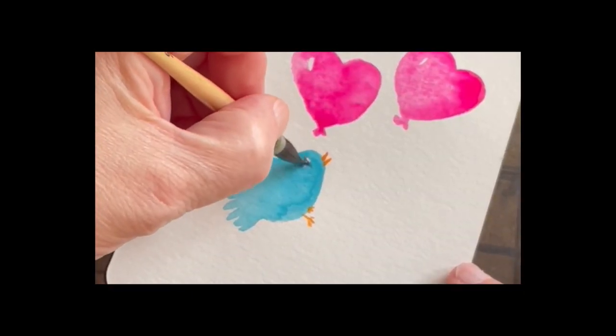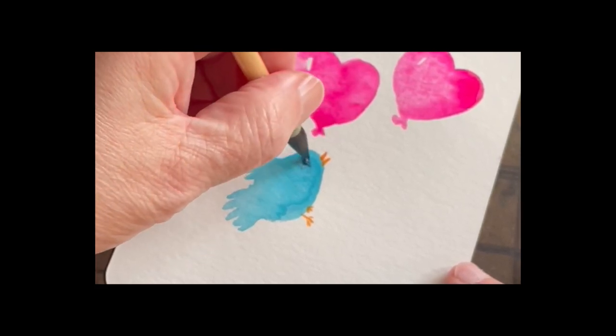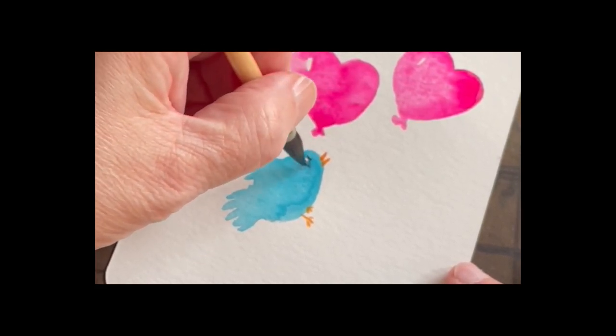We'll finish the bird with a little bit of Indigo. Put in the eye and then just do a little bit of shading.